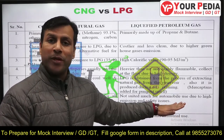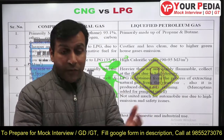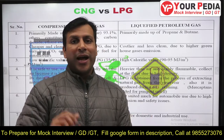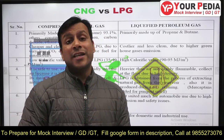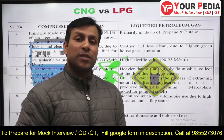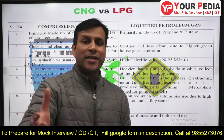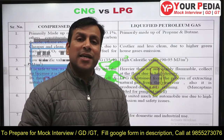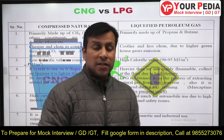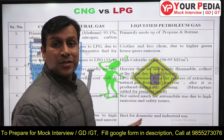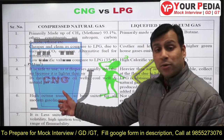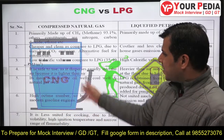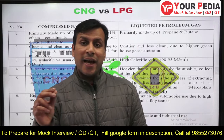LPG is not as suited for automobile use due to higher emissions and safety concerns in handling. However, due to its higher density, LPG is best suited for cooking stoves and domestic use. Its lower volatility compared to CNG and higher energy content make it ideal for domestic purposes. CNG, due to its high octane number and cleaner, lower-emission combustion, is best suited for automobile applications.